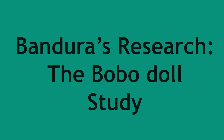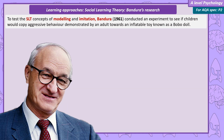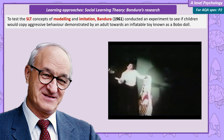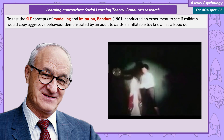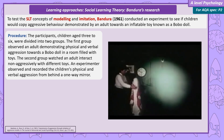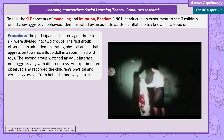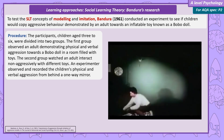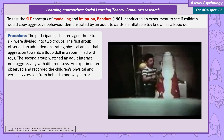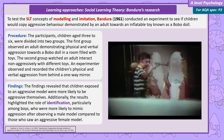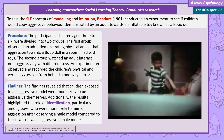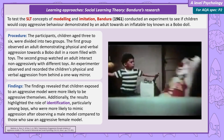Bandura's research — the Bobo Doll study. Bandura's aim was to demonstrate social learning theory's concepts of modeling and imitation. In 1961, he decided to test if an adult modeling aggressive behavior on an inflatable toy called a Bobo Doll would be imitated by young children. The participants were all children between the ages of three and six. In one group, children watched an adult play with a Bobo Doll with physical and verbal aggression. In the second group, the children watched an adult play non-aggressively with other toys. The results showed that children who had been shown an aggressive model were more likely to be aggressive themselves. The results also demonstrated identification, especially for boys, with boys who observed a male model more likely to imitate aggression than boys who had an aggressive female model.